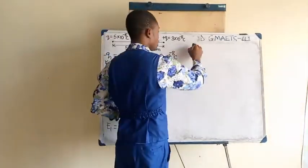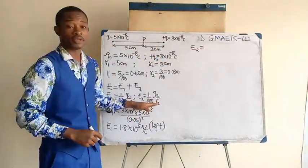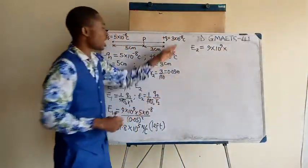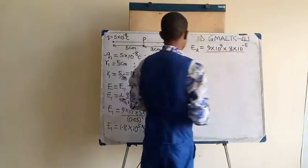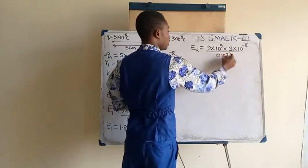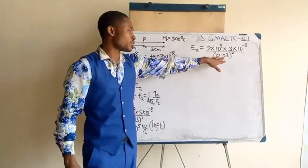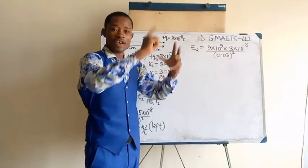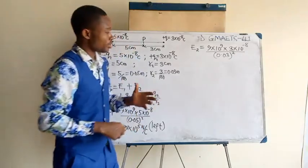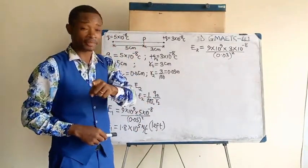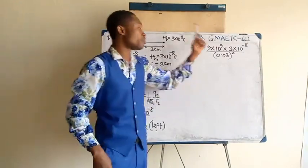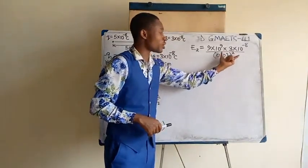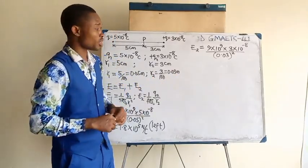Let us now calculate E2 in the same way. E2 is 1 over 4πε₀ which is 9 times 10 to the power of 9, multiplied by the second charge 3 times 10 to the power of minus 8, divided by the square of the distance. The distance R2 is 0.03 raised to the power of 2. Once again, 0.03 to the power of 2 is the same as 3 times 10 to the power of minus 2, then you square everything. 3 times 10 to the power of minus 2 squared gives 3 squared which is 9, then that minus 2 will be multiplied by this power of 2, so you get power minus 4.